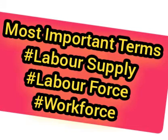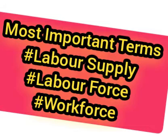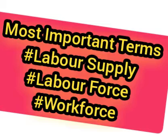Labor supply is measured in terms of man-days and person-days, with one person-day referring to 8 hours of work. If a person works 8 hours in a day, that counts as one person-day. If they work more than 8 hours — say 9 hours across two shifts — that may count as more than one person-day.